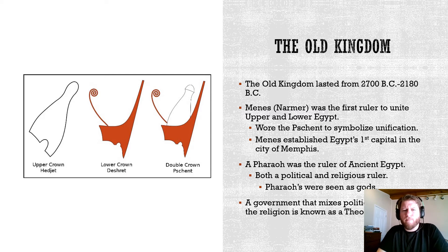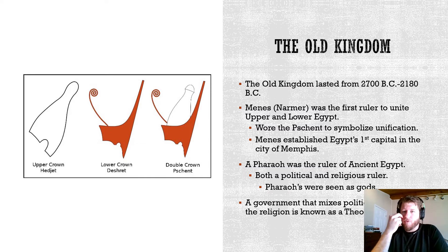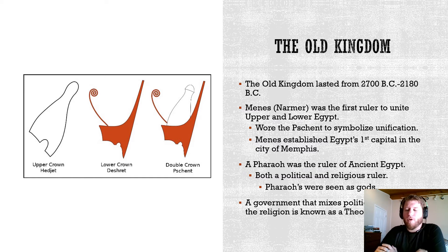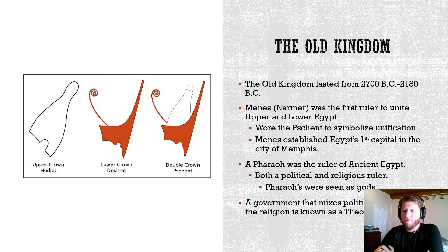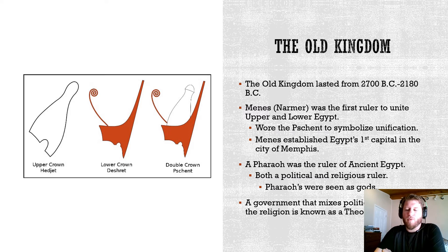Menes, also known as Narmer, is the first king to unite Upper and Lower Egypt together around 2700 BC. Before this, Egypt operated in small city-states or kingdoms — what we call pre-dynastic Egypt. Menes starts dynastic Egypt with the Old Kingdom, bringing these kingdoms together through alliances and warfare. He creates the capital in Lower Egypt, known as Memphis — not Memphis, Tennessee, we just borrowed the name — also called the city of kings.